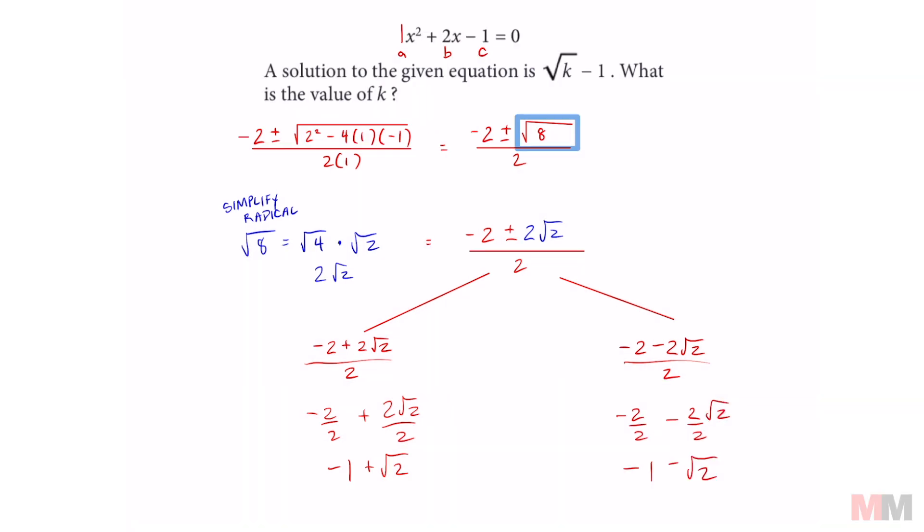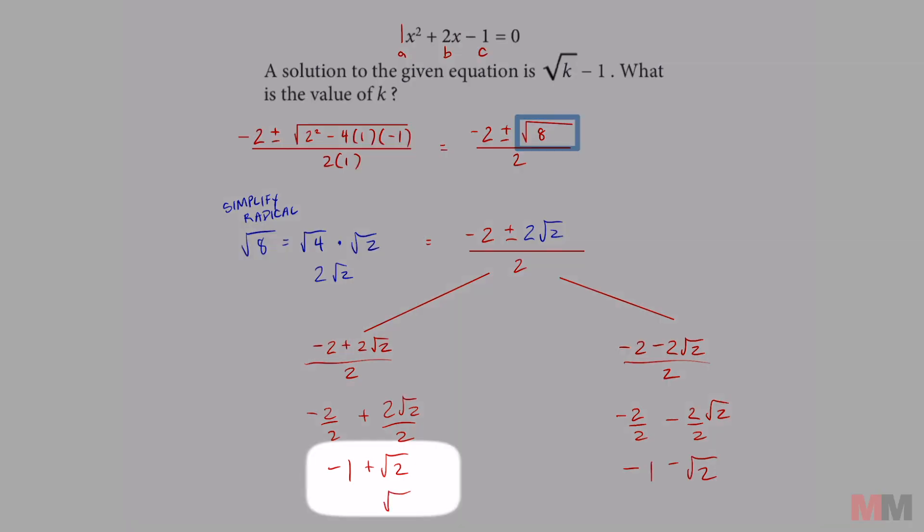Some of you guys can see the answer already. So in the answer, they put the square root term first. So if I flip-flop these, it's the same thing as square root of 2 minus 1. This one's gonna be negative root 2 minus 1. Now we just gotta match that up where the square root is the positive 1.